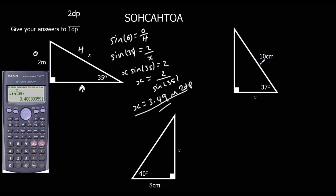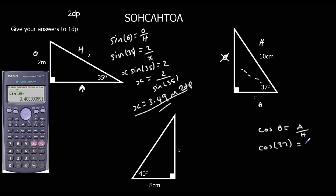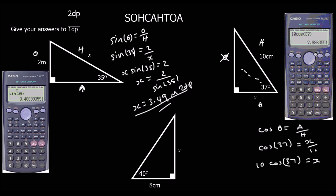For the second practice question, H is opposite the right angle, O is opposite the angle, and A is in between the angle and the right angle. H is with 10, A is with X, and O is by himself, so we're using CAH. Cos theta equals adjacent over hypotenuse: cos 37 = X ÷ 10. Times by 10: X = 10 × cos 37. That gives X = 7.99 cm to 2dp.